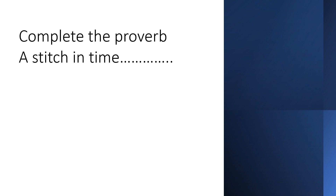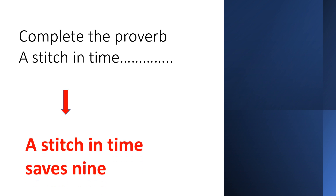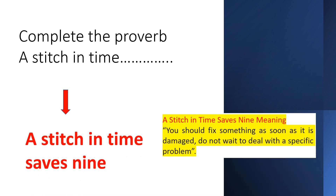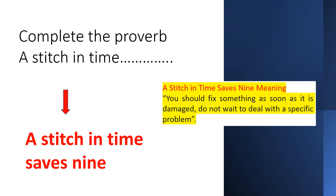Complete the proverb: A Stitch in Time. A Stitch in Time Saves 9 is an old English proverb which means that you should fix something as soon as it is damaged. Do not wait to deal with a specific problem — if not, things will get worse and the problems will take longer to deal with.